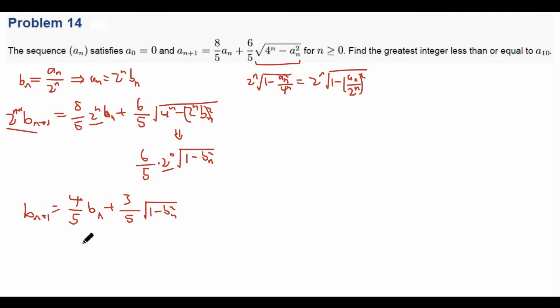So this expression reminds us in two ways of trigonometry. The first way that reminds us of trigonometry is this thing, square root of 1 minus B_n squared. Because if we substitute B_n to, say, sine of theta_n, then the square root of 1 minus B_n squared is simply cosine of theta_n by the identity sine squared theta plus cosine squared theta equals 1. Well, it would be absolute value because the square root is always positive.